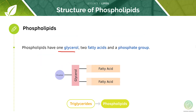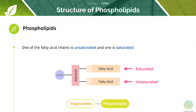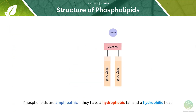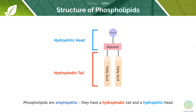Phospholipids have one glycerol, two fatty acids and a phosphate group attached together. One of the fatty acid chains will be saturated, whilst the second one is unsaturated. The phosphate groups can have extensions, which attribute to the unique properties of the different phospholipids. These are said to be amphipathic — meaning they have both hydrophilic, which is attracted to water, and hydrophobic, which is repelled from water, regions.